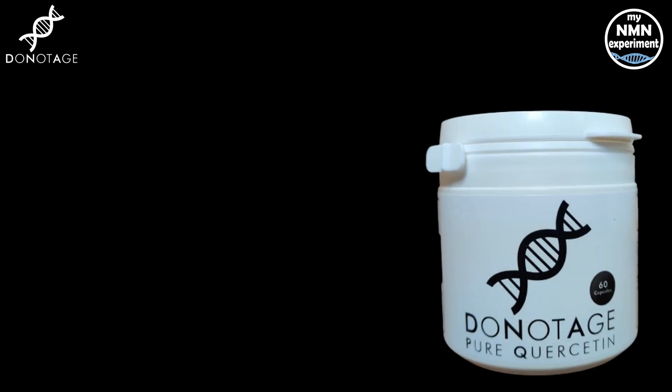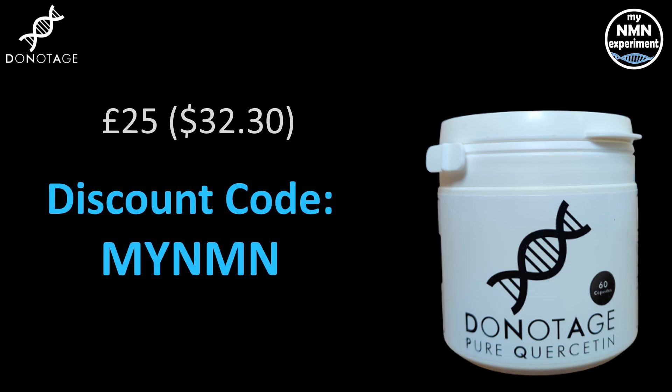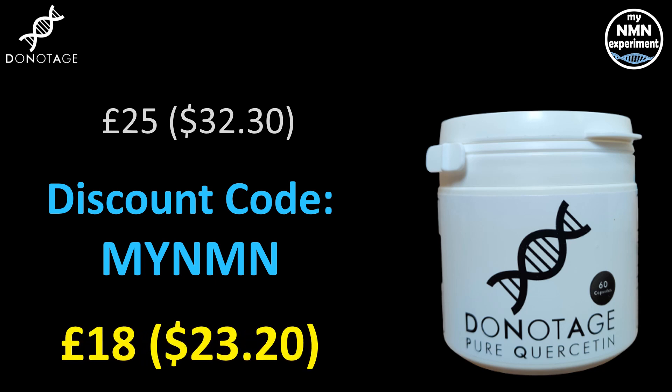DoNotAge.org are selling 60 times 400 milligram capsules, which normally retails for 25 pounds sterling — that's $32.30. There's an introductory offer which lowers that to 20 pounds sterling, so the price goes down to $25.80. If you use the MyNMN discount code, that attracts a further 10% discount and you will only pay 18 pounds sterling, which is around $23.20.